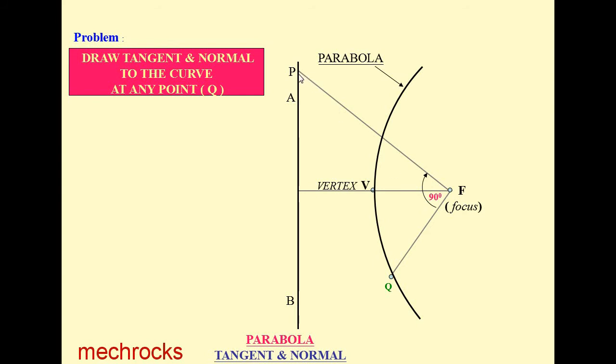Now join P with Q. This is our required tangent. Now we have to draw the normal at Q to the parabola. Normal and tangent should always be perpendicular to each other. Draw a perpendicular to PQ like this.